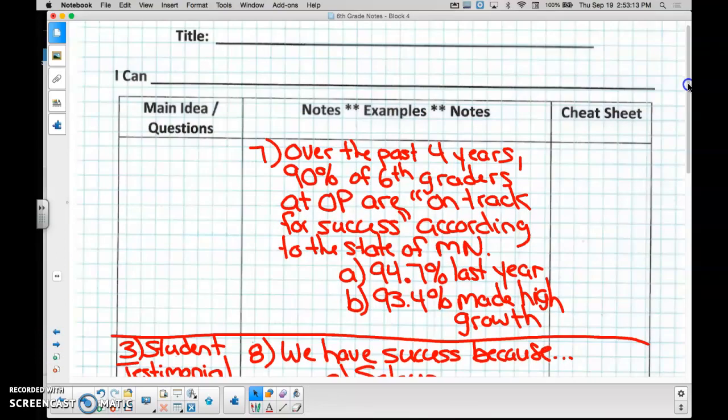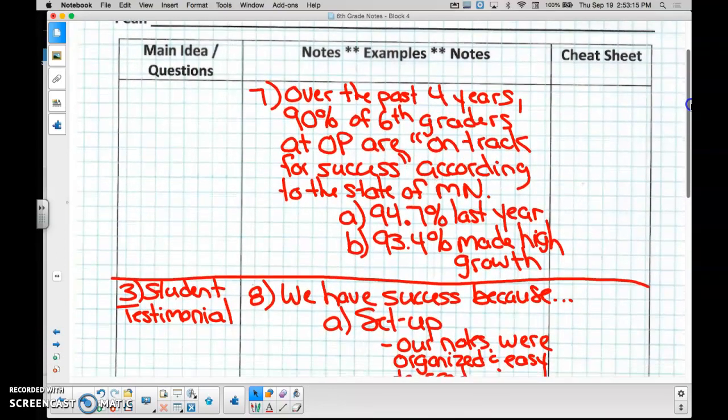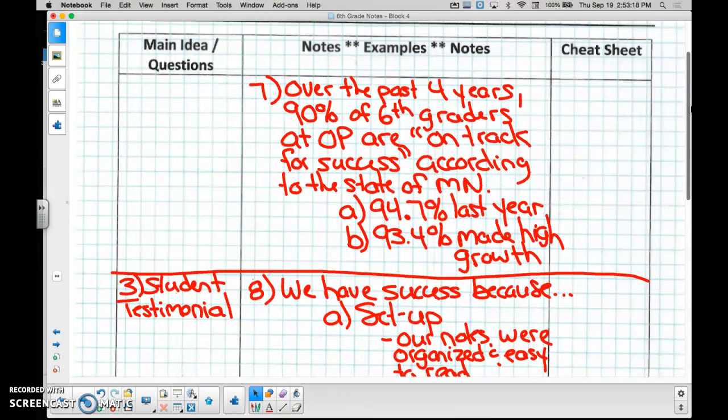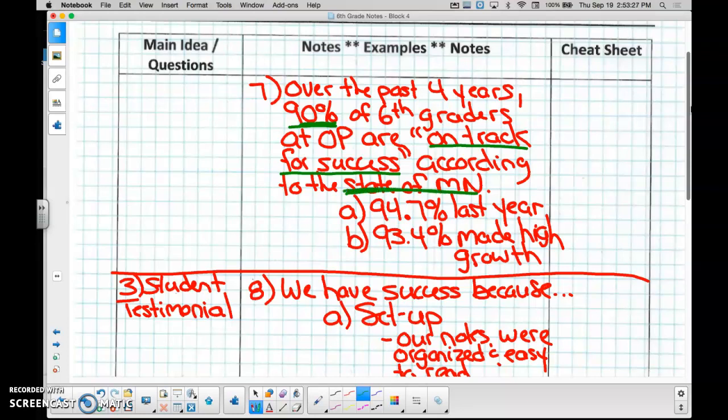Then we went over here, and I have done my own research over the past four years, and I have found that 90% of my sixth graders are on track according to the state of Minnesota. And then last year we had our best year ever. How many? 94.7%. And then 93.4% made high growth. That was really good. Are we going to beat that this year? Yes. What is our goal for both of these categories? 100%. Excellent.